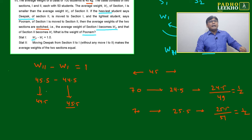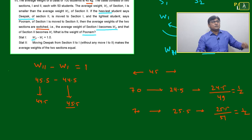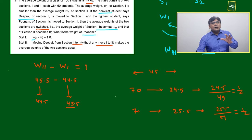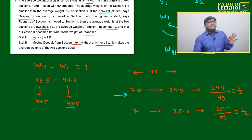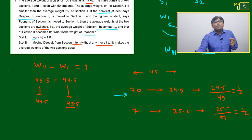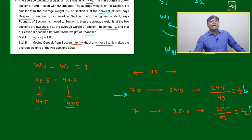Statement 1 is insufficient because we cannot get the exact number being shifted. Now Statement 2: moving only Deepak from Section 2 to Section 1, without any movement from Section 1 to Section 2, makes the average weights of the two sections equal.